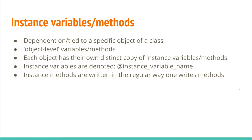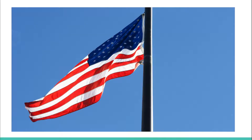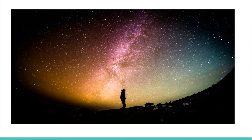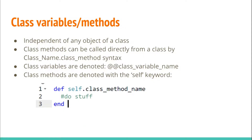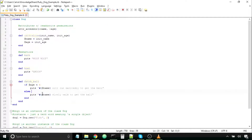Sometimes we don't want variables or methods to be so dependent or tied to a specific object of a class. Sometimes we want them to have more freedom, to be more general purpose. One of these types with a sense of more general purpose is class variables and methods. Let's learn by example and go back to the dog class that we created.